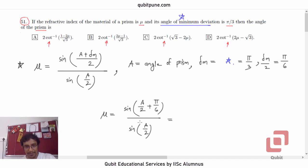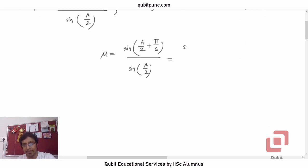Once you get to this step, then the rest is just simple mathematics. Use the compound angle formula sin of A plus B. So it is sin A cos B plus cos A sin B upon sin of A/2.